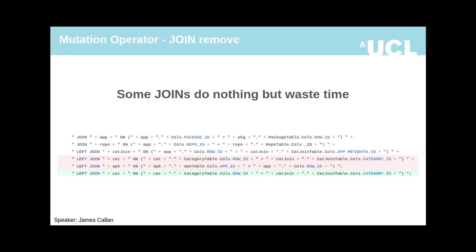There are join statements which aren't needed, so we propose the remove join operator. We can see a real commit which simply removes a join. The program did not need to change despite the different results that the query will return.